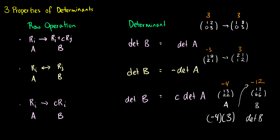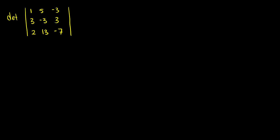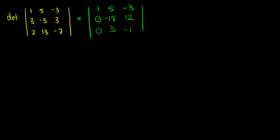When we do row operations we have to keep these properties in mind. Here's a worked example where we find the determinant of a 3×3 matrix using row operations. First, we do row replacement — we subtract 3 times the first row from the second row, getting [0, -18, 12], and subtract 2 times the first row from the third row, getting [0, 3, -1]. At this point there's no change in determinant.